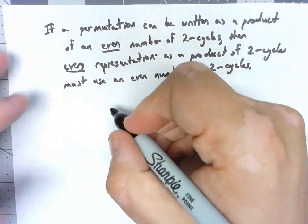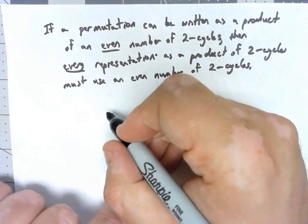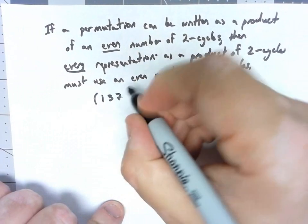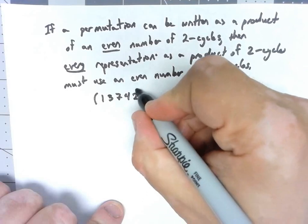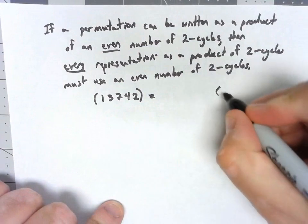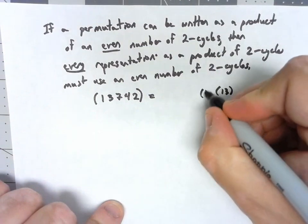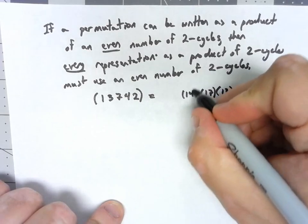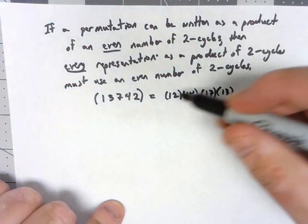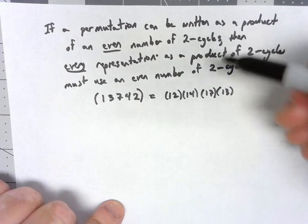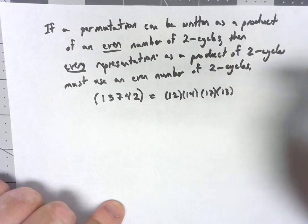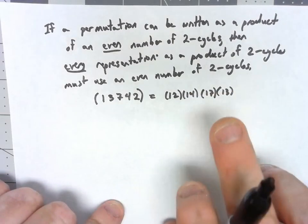So if I have, for example, the permutation (1 3 7 4 2), we talked about how we could write this as (1 3)(1 7)(1 4)(1 2), going right to left. Obviously there are 4 two-cycles. Now there are other ways this can be written as a product of two cycles, but no matter what, it's always going to have an even number of two cycles.